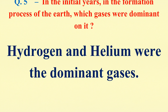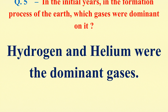Question number 5: In the initial years in the formation process of the Earth, which gases were dominant on it? Hydrogen and helium gases were the dominant gases during the formation process of the Earth, in the early years when the Earth was formed.